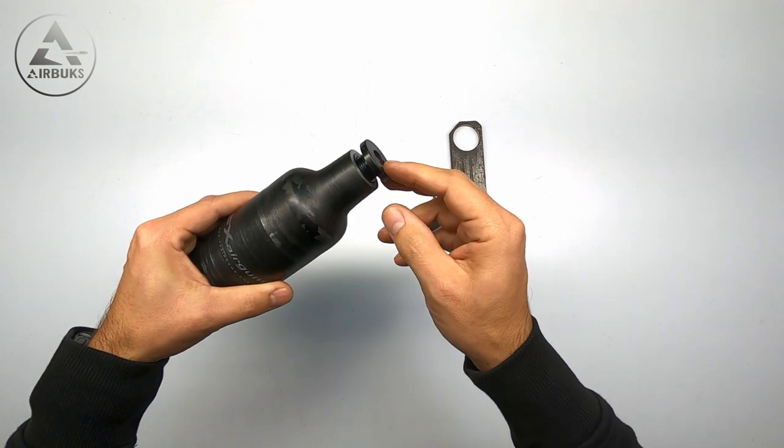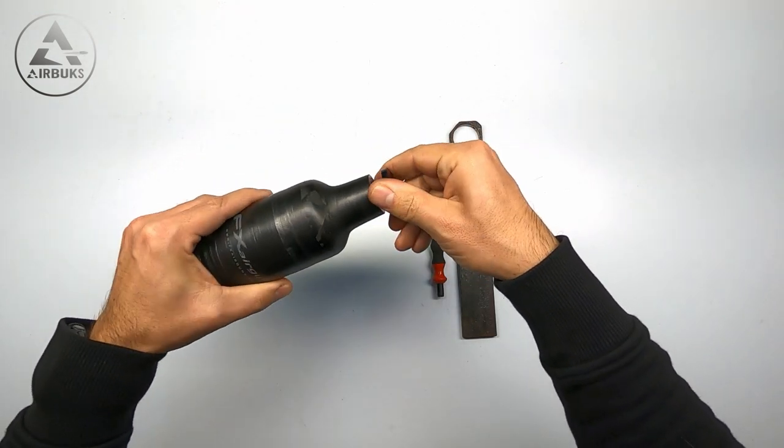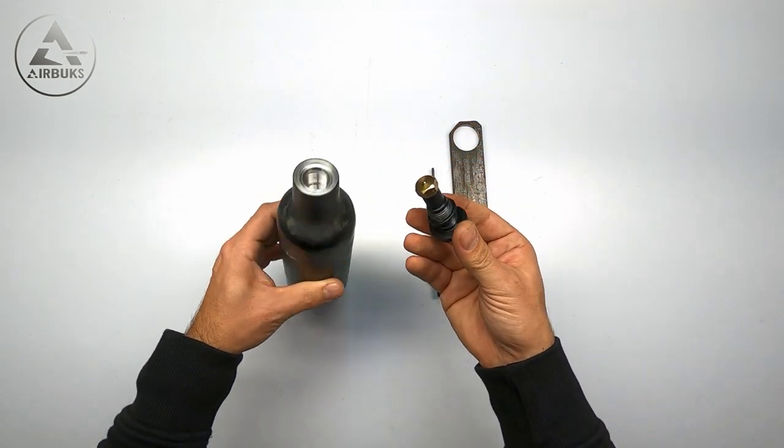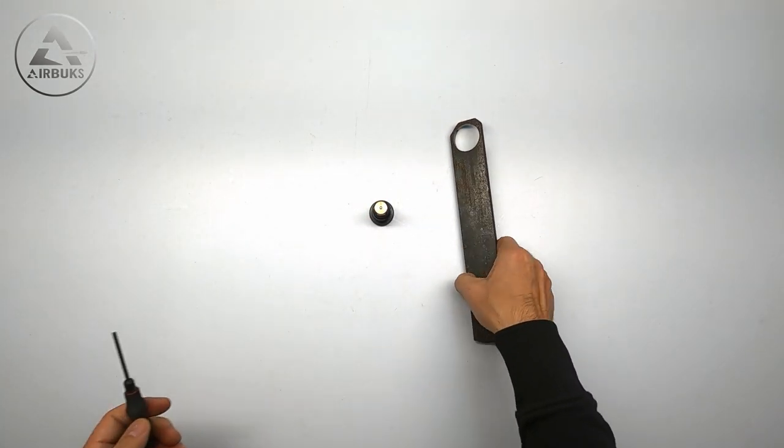Of course always make sure your bottle is empty. There is no pressure inside so you don't hurt yourself. The valve comes out like this. Let's put the bottle and the tool to the side.